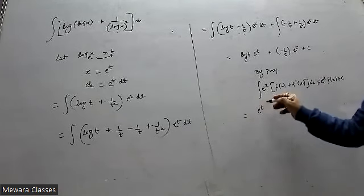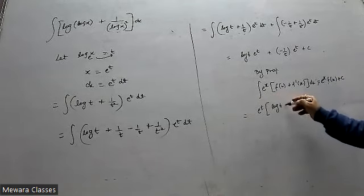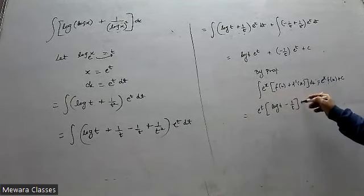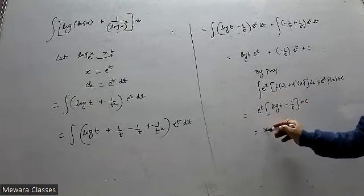E to the power t common. Log t minus 1 by t. Value of e to the power t is x.